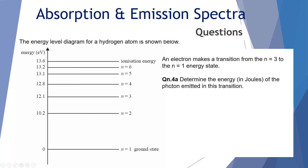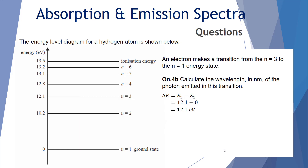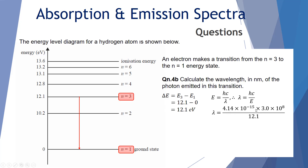Question 4a: An electron makes a transition from n equals 3 to n equals 1. Determine the energy in joules of the photon emitted. The change in energy is 12.1 minus 0, which is 12.1 electron volts. Converting to joules by multiplying by 1.6 × 10⁻¹⁹ gives 1.94 × 10⁻¹⁸ joules. Question 4b: Calculate the wavelength in nanometers of the photon emitted. Using lambda equals hc over E, with Planck's constant in electron volt seconds and the energy transition of 12.1 electron volts, gives a wavelength of 103 nanometers.